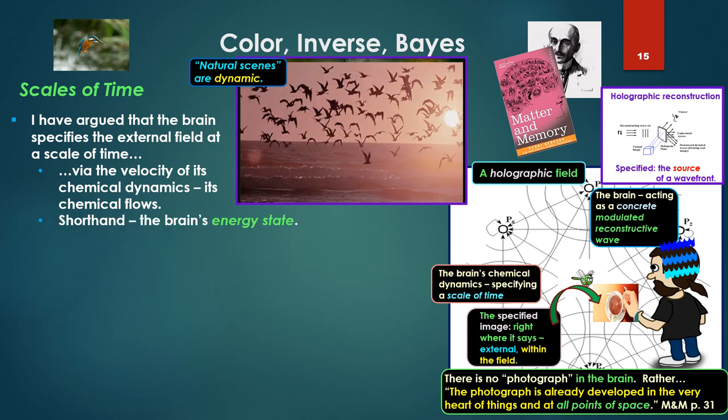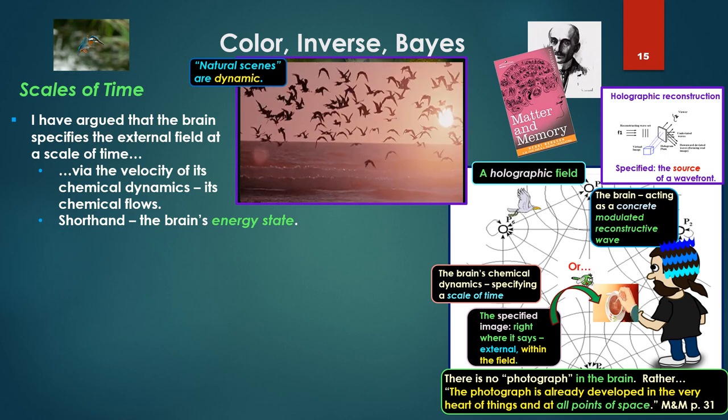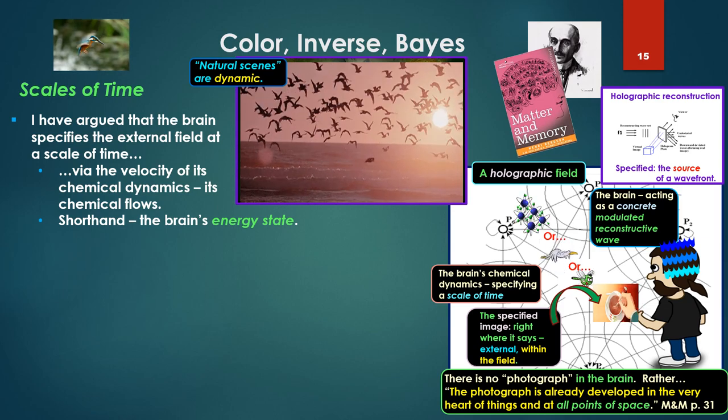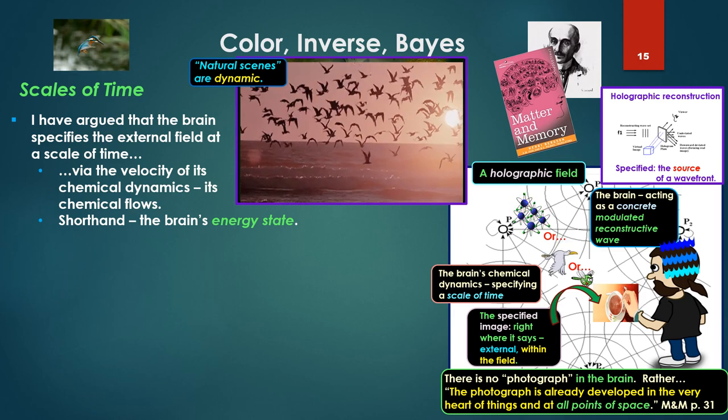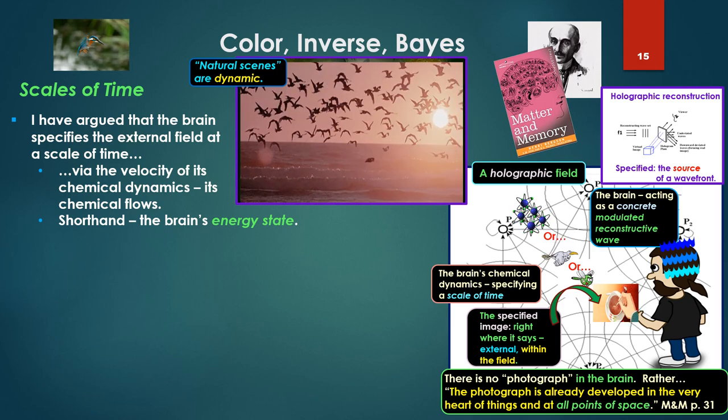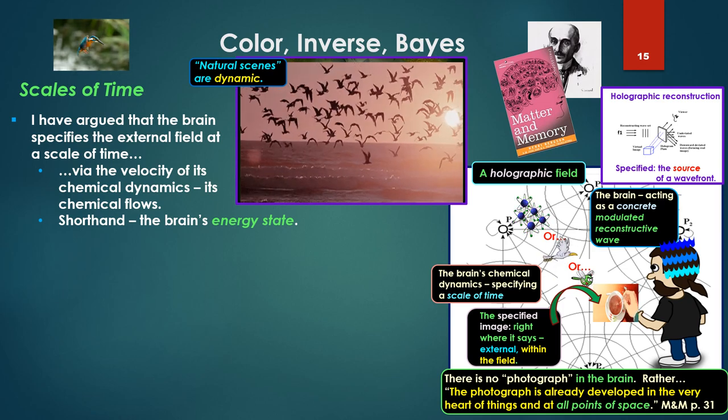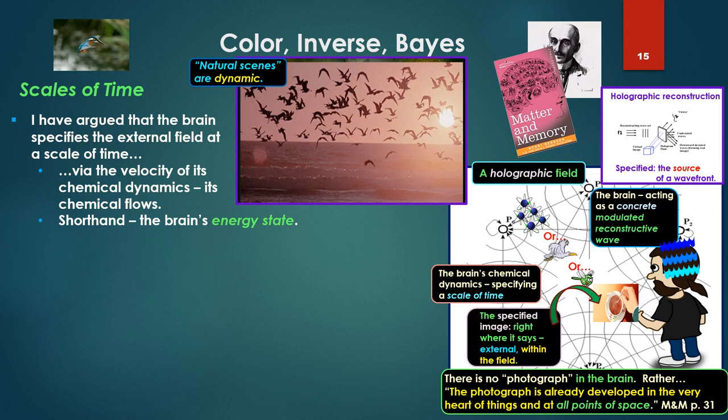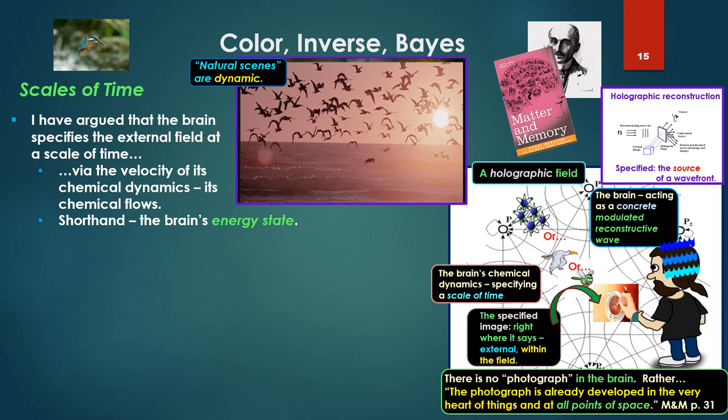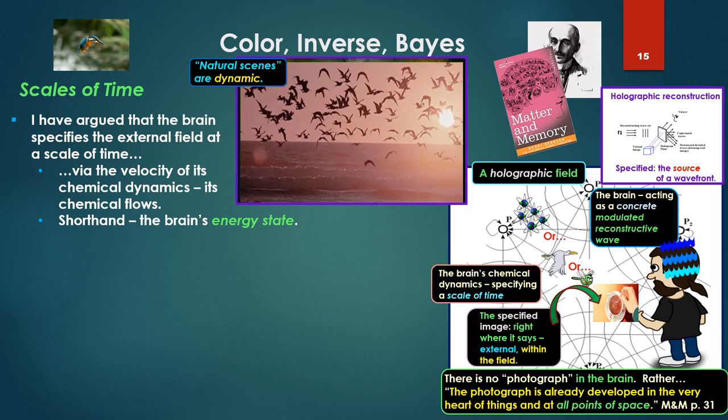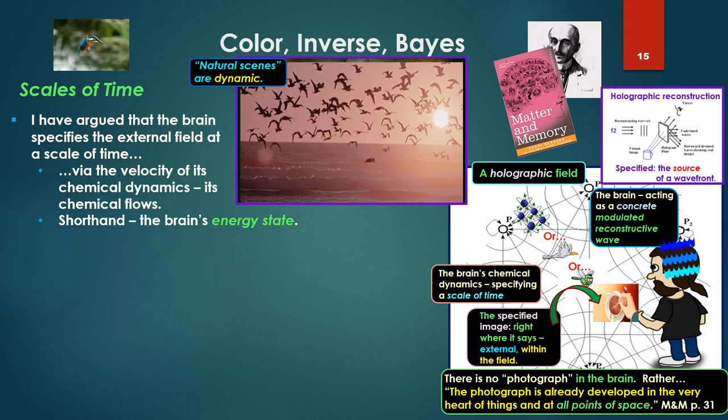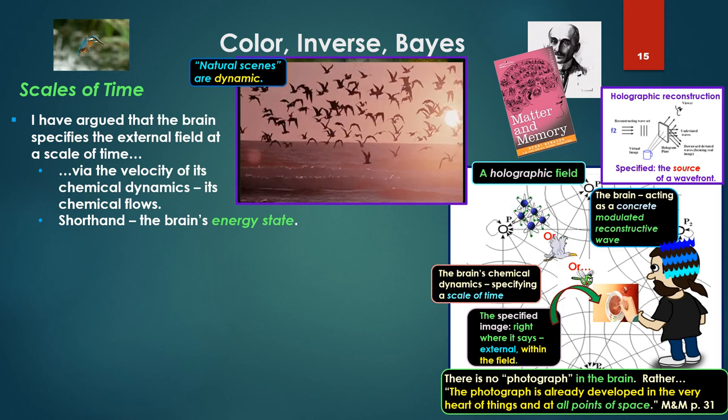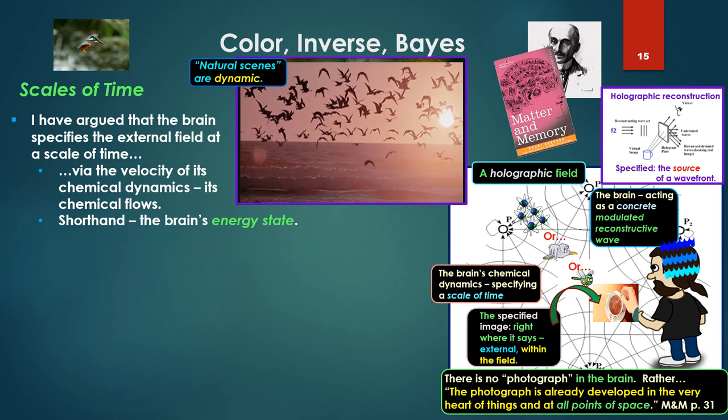Notice this is Bergson's model. The brain is a holographic wave, a modulated reconstructive wave passing through a holographic field. Up there we have a little model of holographic reconstruction. Frequency one is specifying or being passed through that holographic plate and I'm seeing a virtual image of a cube. If I modulate it, frequency two, I can see a different source of that wave front, a cup in this case. So we're modulating the reconstructive wave and the image, the specified image, is right where it says it is, external, within the field.